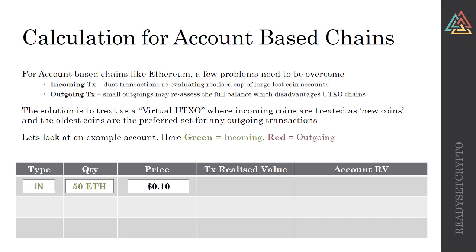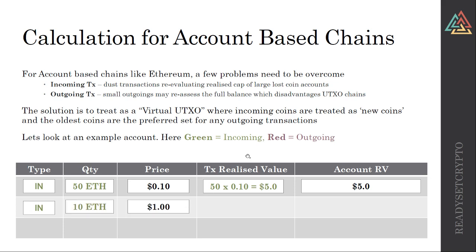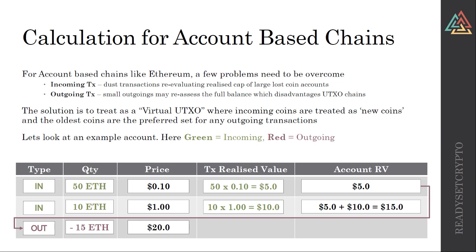Here's a quick example. Start with 50 Ethereum at 10 cents — $5 valuation, account realized value of $5. If another 10 Ethereum come in at $1, you get $10 realized value for that transaction; summing both gives a wallet realized value of $15. If we then send out a transaction of 15 ETH at $20, it comes from the oldest coin set — that $15 is deducted from the initial $50, and you get a re-evaluation of those coins at the new price point. That's how the UTXO set compares to an account-based chain for the realized cap calculation.